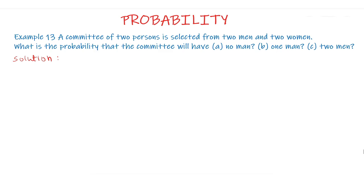Total number of committees that can be formed equal to 4C2 which is equal to factorial 4 upon factorial 2 into factorial 2. This is equal to 6.